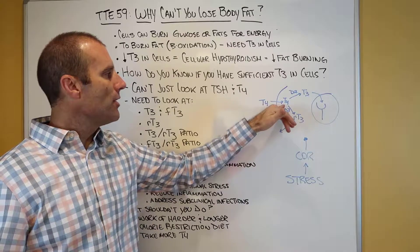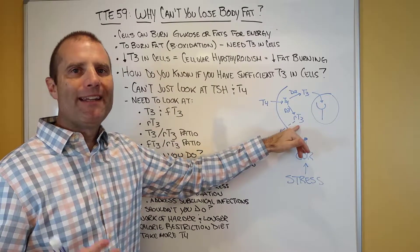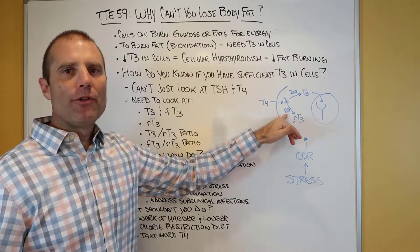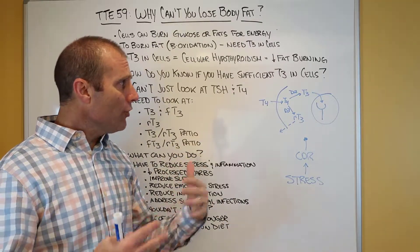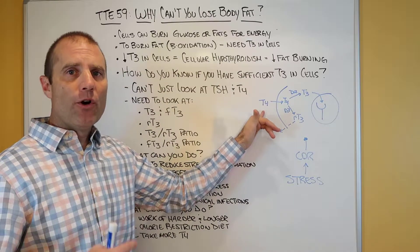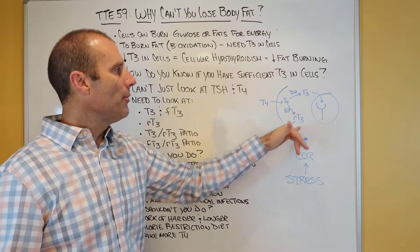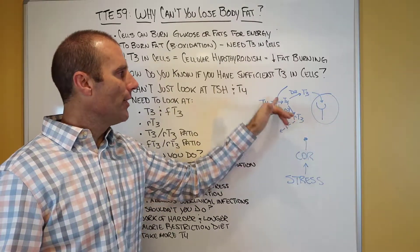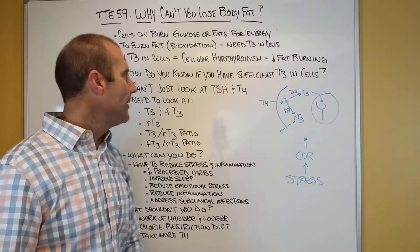Or in certain situations, T4 can be converted to reverse T3 — an inactive form of thyroid hormone — by an enzyme called deiodinase 3. So you can have sufficient levels of thyroid hormone being produced by the gland, no hypothyroidism at the gland, but you can have hypothyroid symptoms because T4 is being converted to reverse T3 instead of T3.